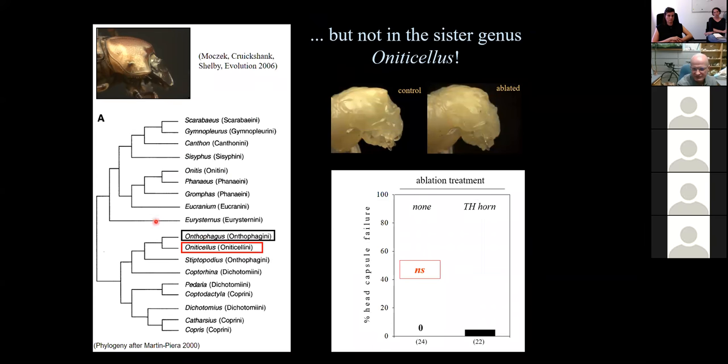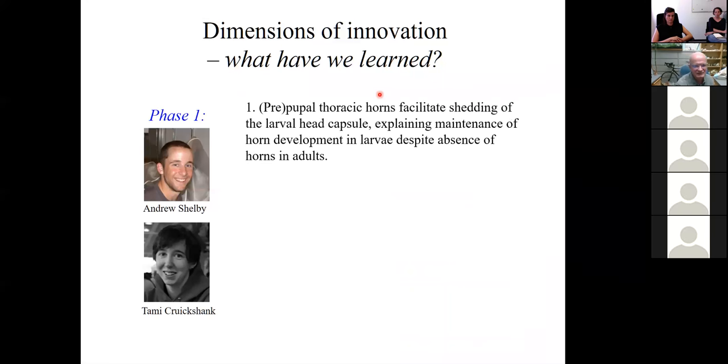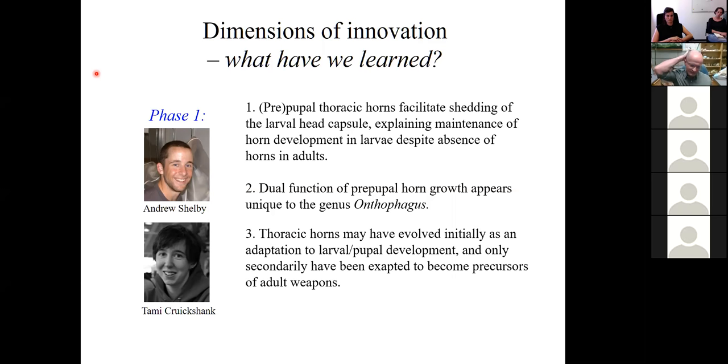And then we move outside the genus Onthophagus into the sister genus Oniticellus. These guys don't have horns on the pronotum, but they have a certain bumpiness. You can do the same surgery in the larva. And when you do that, they don't give a damn. They shed their head capsule no matter what. So this was exciting because it suggested that prepupal thoracic horns facilitate the shedding of the larval head capsule. It also suggests that this dual function appears to be unique to the genus Onthophagus. And it raises the possibility that thoracic horns may have evolved initially as an adaptation to larval-pupal development and only secondarily been co-opted to become precursors of adult weapons.